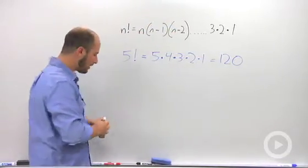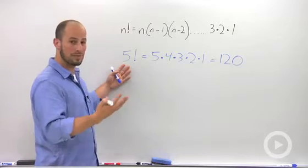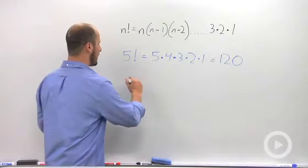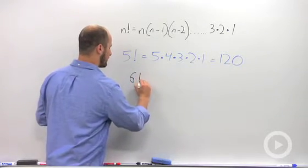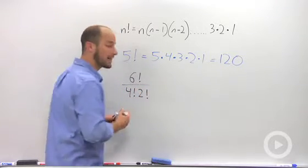We can also have expressions with more than one factorial. So say we look at six factorial over four factorial times two factorial.